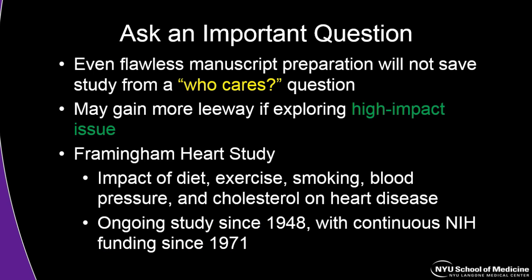A degree of paranoia can be really helpful here. Big obvious flaws don't magically disappear as time goes by — you really need to address major flaws up front before you've invested too much time. One of the most important points for getting your paper published is to ask a really important question. Sometimes we might have done the perfect study with the most robust methodology, but if nobody cares about the finding, you'll still run into challenges. High impact studies will gain more leeway with reviewers and journals. The Framingham Heart Study, studying the impact of diet, exercise, smoking, and blood pressure control on heart disease, is a great example of a high-impact, continuously funded study.